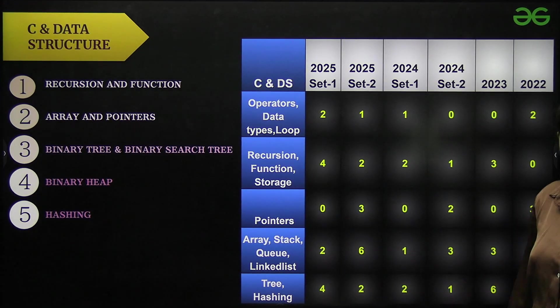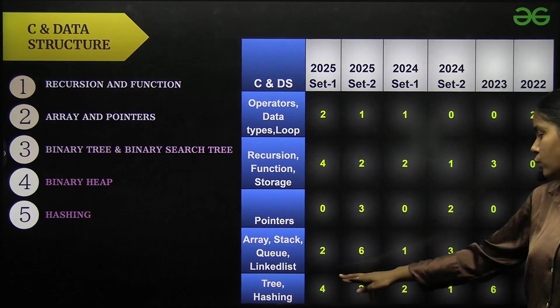Array stack two marks in 2025 set two, array stack queue linked list consists of six marks. Hashing set one has four marks and set two has two marks, so that's why these topics are important for C and data structure.